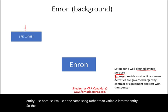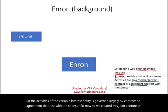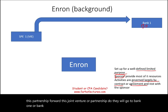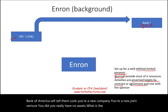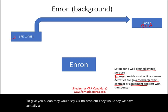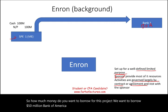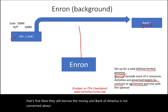The activities of the Variable Interest Entity were governed largely by contract or agreement that rested with the sponsor. This joint venture would go to Bank of America and ask for a loan. Bank of America would say you're a new company with no assets — but the SPE would say they have a guarantor: Enron will guarantee the loan. So Bank of America would lend the SPE, let's assume, $100 million, and they weren't concerned because Enron was guaranteeing the transaction.